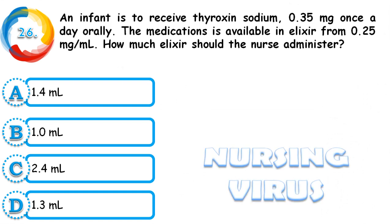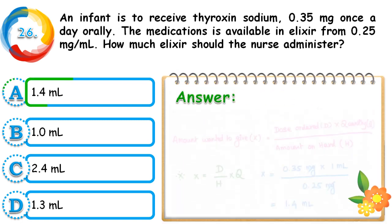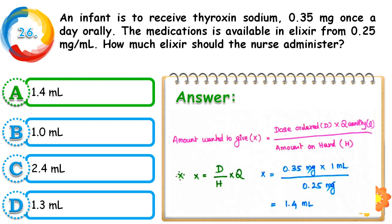Question 26: An infant is to receive thyroxine sodium 0.35 mg once a day orally. The medication is available in elixir form at 0.25 mg per ml. How much elixir should the nurse administer? The options are 1.4 ml, 1 ml, 2.4 ml, and 1.3 ml. The correct answer is 1.4 ml.